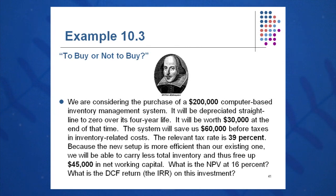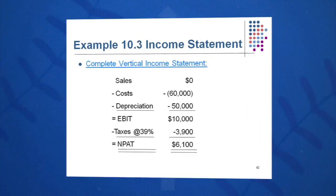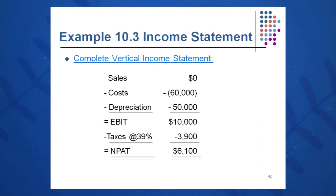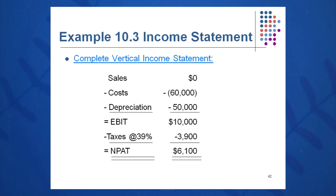What's the NPV at 16% and what's the IRR? Same process as always: income statement, balance sheet, cash flow. Sales are zero, costs are $60,000, depreciation straight line to zero is $50,000 per year. Watch the sign — costs are negative, so reducing costs means a double negative on that line. Taking negative $60,000 minus $50,000 gives an EBIT of $10,000.